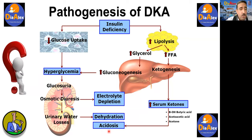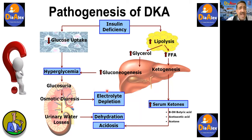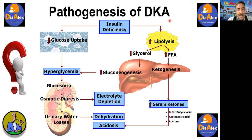Due to osmotic diuresis, the patient usually has dehydration and electrolyte depletion — most importantly, potassium depletion. That's why in the treatment of DKA one should consider giving insulin, rehydrating the patient, giving potassium supplements, and potentially correcting acidosis with specific measures. These are exactly the points we are going to discuss in the management of diabetic ketoacidosis.